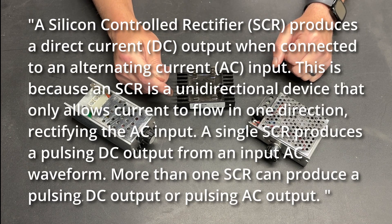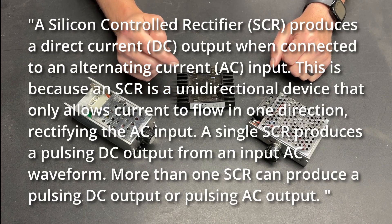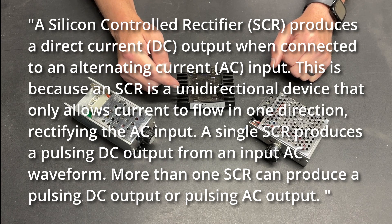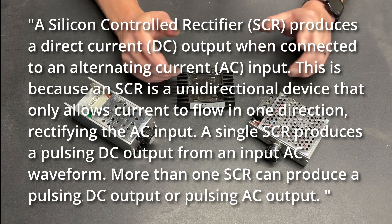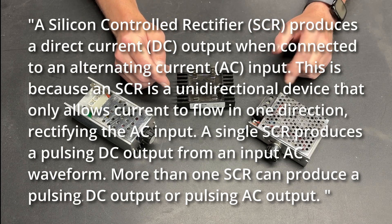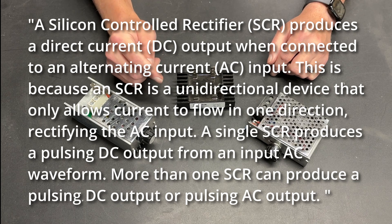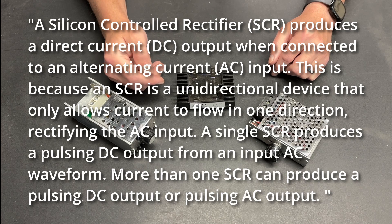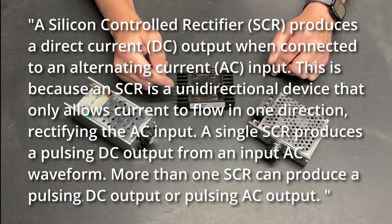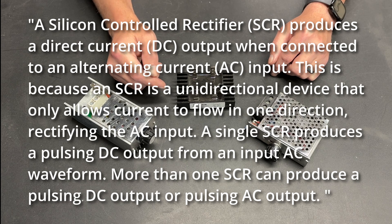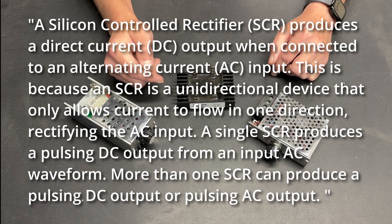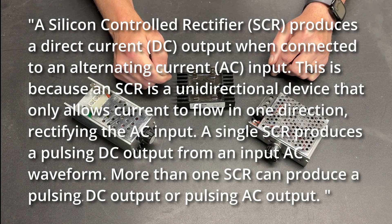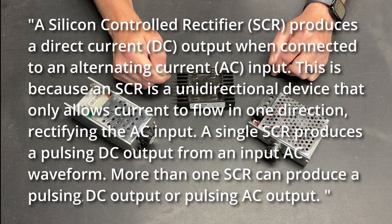And then, he goes on to quote something from Google. A silicon-controlled rectifier, SCR, produces a direct current DC output when connected to an alternating current AC input. This is because an SCR is a unidirectional device that only allows current to flow in one direction, rectifying the AC input. A single SCR produces a pulsing DC output from an input AC waveform. More than one SCR can produce a pulsing DC output or pulsing AC output.